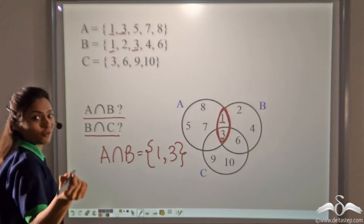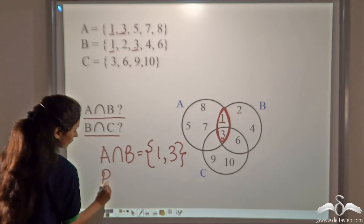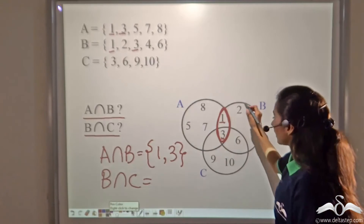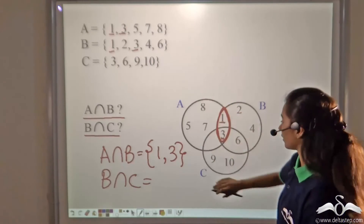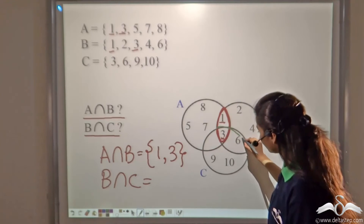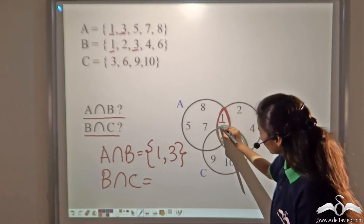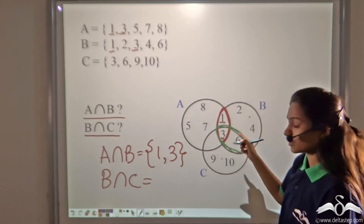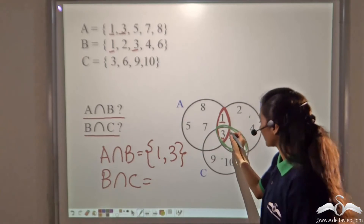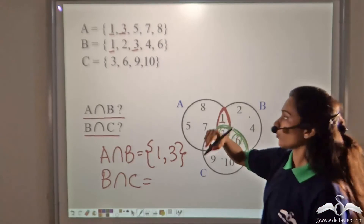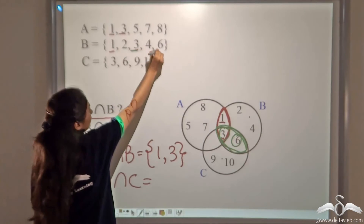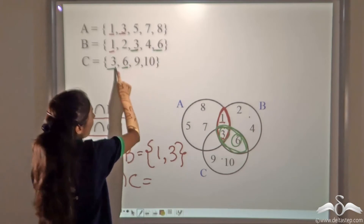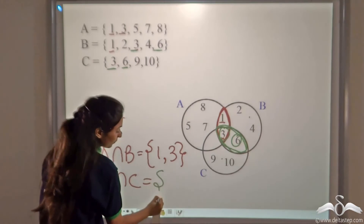Now find B intersection C. Looking at B and C and ignoring A, the common overlapping part between B and C shows elements present in both. Set B has 3 and 6, and set C also has 3 and 6, so these two elements belong to both B and C. Therefore B intersection C is {3, 6}.